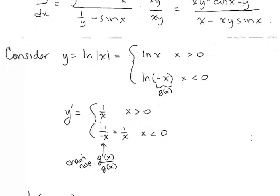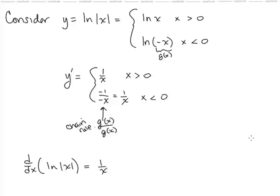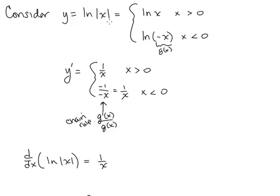Now we're going to talk about integrating with ln x. But first, let's take a look at ln of absolute value of x. This function can be written piecewise as ln x for x strictly positive and ln of negative x for x strictly negative. Remember that we can only plug positive numbers into the natural log function, so ln of absolute value of x is not defined when x equals 0.